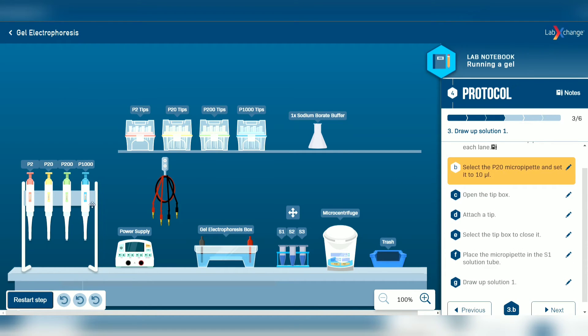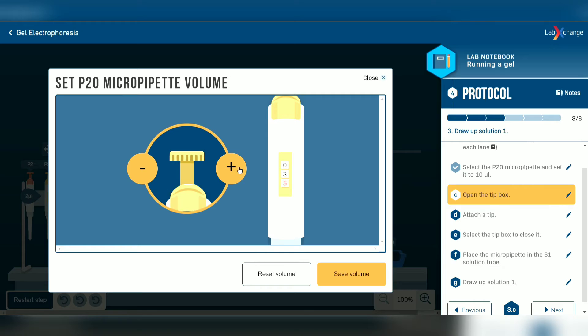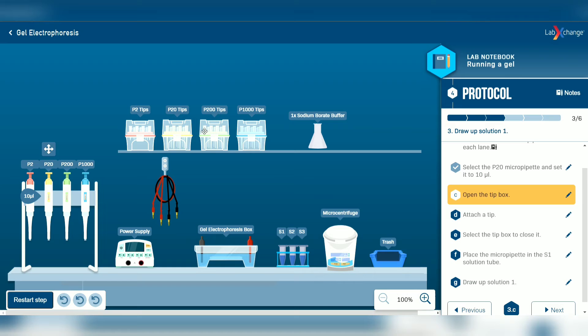Continue by selecting the P20 micropipette and set it to 10 microliters. Now open the P20 tips box and select a tip. Now we have to draw 10 microliters of S1 solution.